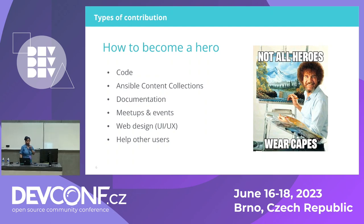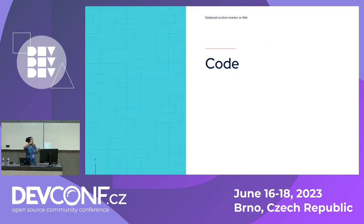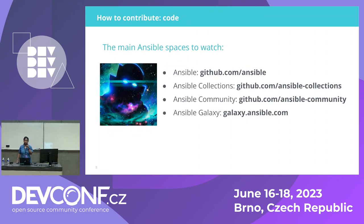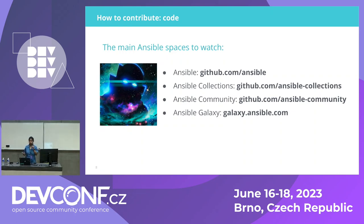Now we'll describe each of these in detail. How can you contribute via code? Ansible is a big ecosystem, and you might ask: which spaces should I look for if I want to contribute? These are the spaces: three GitHub organizations and Ansible Galaxy.